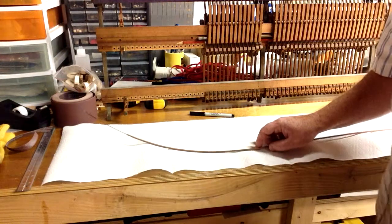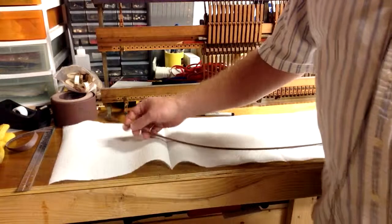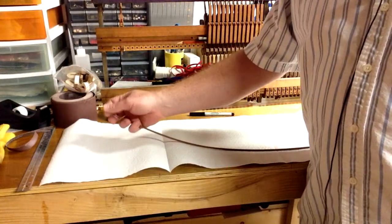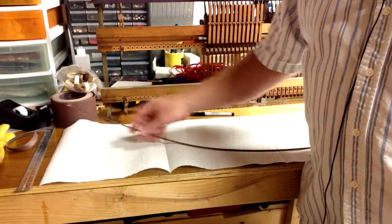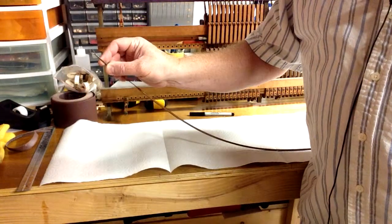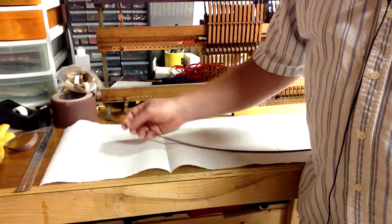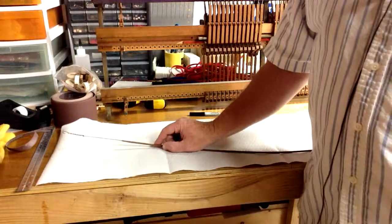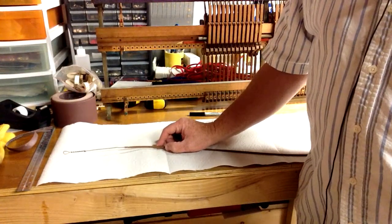When a base string breaks, the diameter of the winding, the diameter of the core, the length of the winding, and the length from the hitch pin loop to the start of the winding, those are all unique to that individual string, which varies from one piano to another.